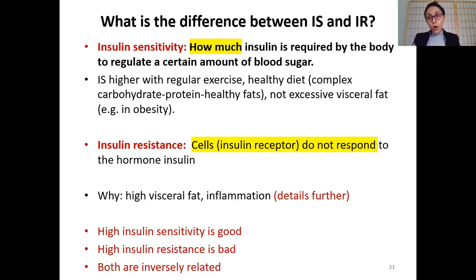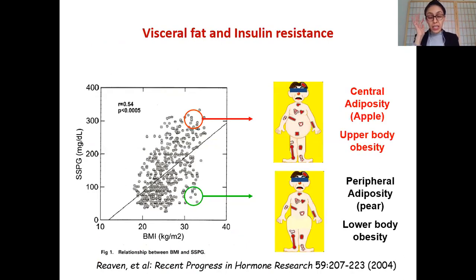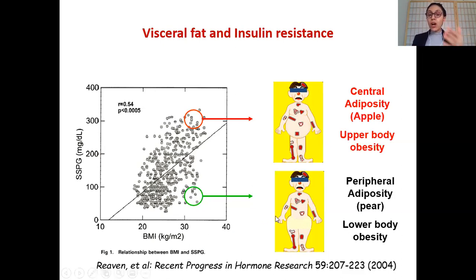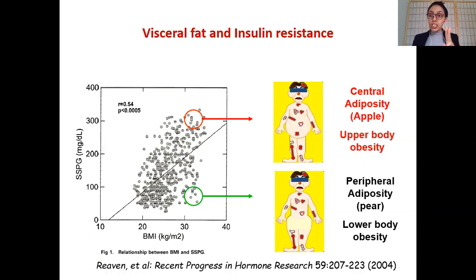It's very important to remember that insulin sensitivity and resistance are inversely proportional. If you have high insulin sensitivity — which is a good thing — you will have low insulin resistance, also a good thing. The opposite, low insulin sensitivity and high insulin resistance, is a bad thing. Apple-shaped or central obesity, which has high visceral fat around your organs, results in high insulin resistance. Pear-shaped obesity, with fat on the buttocks and thighs where organs are not located, results in lower insulin resistance — which is good.